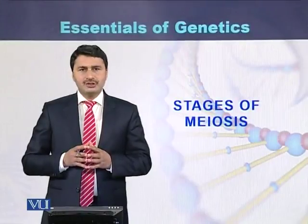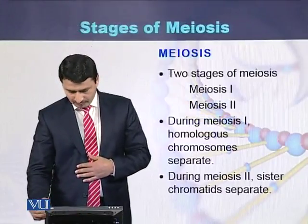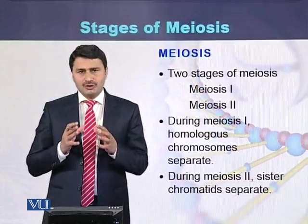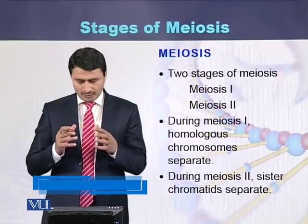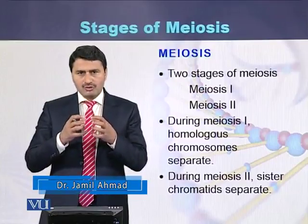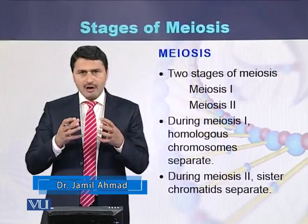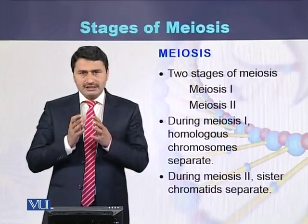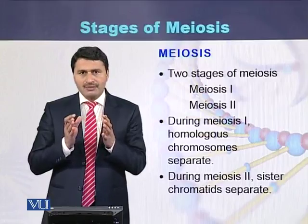Stages of Meiosis. There are two stages of meiosis: meiosis I and meiosis II. During meiosis I, homologous chromosomes separate from each other. While in meiosis II, the sister chromatids separate from each other.